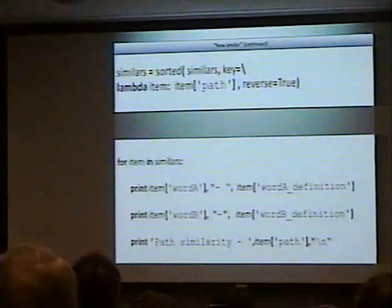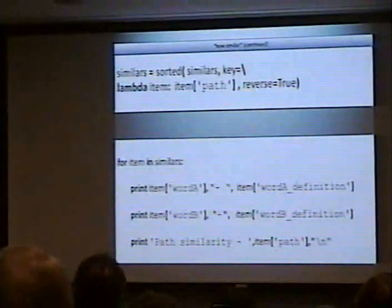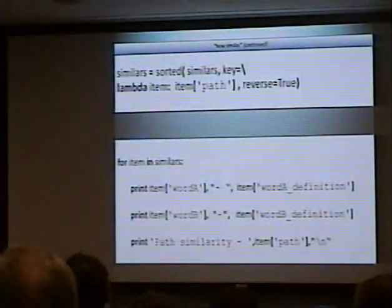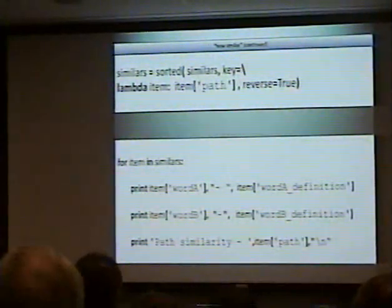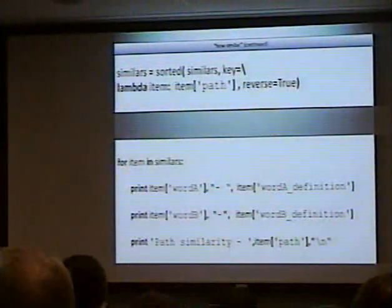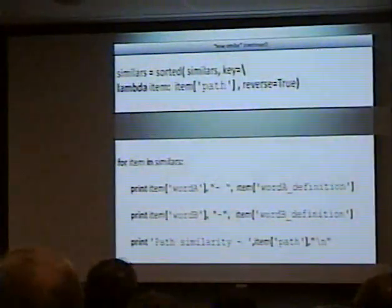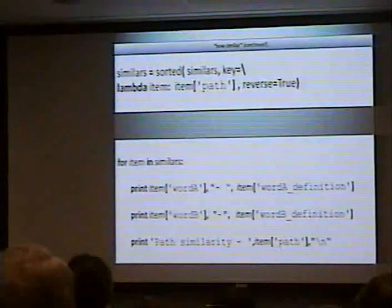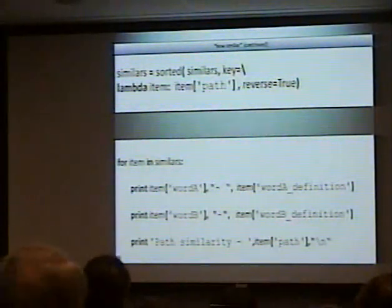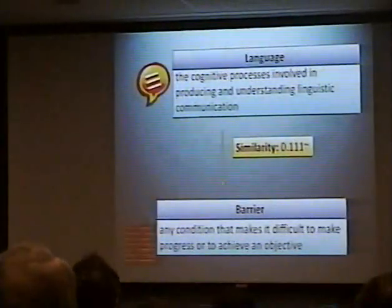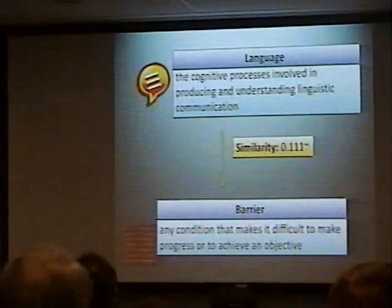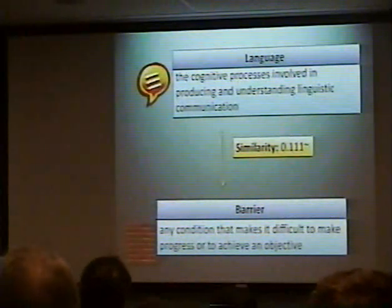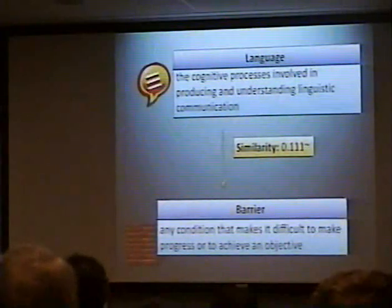We sort that list by path similarity. The path similarity is basically an index — it's always below one, usually a decimal fraction of some sort. Then we print each one: all the dictionary items we created, looping through each one to print the definition, the word, and the similarity score. Between 'language' and 'barrier', it actually found a similarity score of .11 repeating, which I believe is calculated as one over the number of hops it has to make to find where they merge.